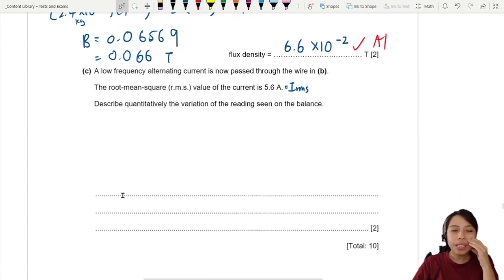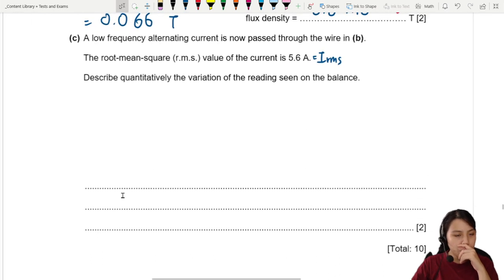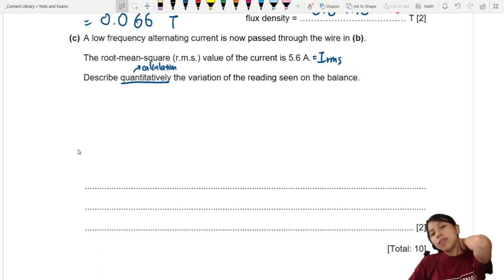Describe quantitatively the variation of the reading seen on the balance. Oh ho, oh my. Okay. One thing to note is, when you see there's a gap and then there's lines, means they want you to do some working and also explain your work. They also say here, quantitatively means they want you to show your calculation, how you get your values.